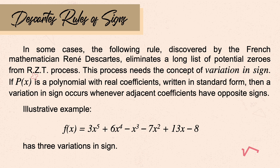Why? The first variation is from positive 6x to the 4th power to negative x cubed. The second variation is from negative 7x squared to positive 13x. The third is from positive 13x to negative 8. We call these alternating symbols — we just count the terms with alternating symbols.